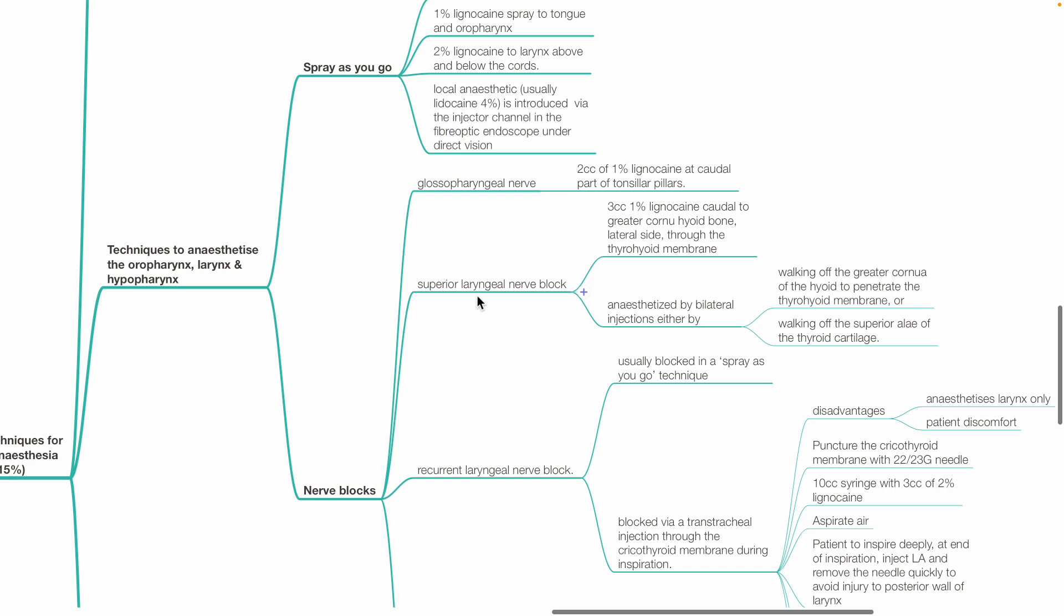Nerve blocks. The glossopharyngeal nerve may be blocked by applying 2 cc's of 1% lidocaine at caudal part of tonsillar pillars. Superior laryngeal nerve can be blocked by bilateral injections of 3 cc 1% lidocaine. By walking off the greater cornu of the hyoid to penetrate the thyrohyoid membrane. Or walking off the superior ala of the thyroid cartilage.